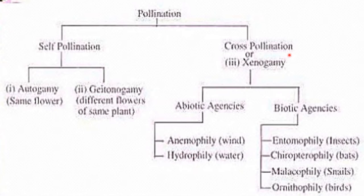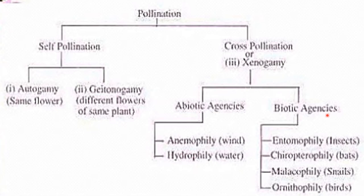Regarding the classification of pollination: self pollinated crops are further divided into autogamy, where the same flower is involved, and geitonogamy, where different flowers of the same plant are involved. Cross pollination, also called xenogamy, is further divided based on whether it involves abiotic or biotic agencies.